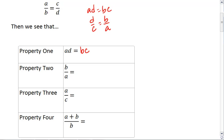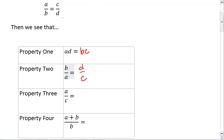Which shows me that if I wanted to flip the first ratio to be b over a, all that does is flip the second ratio to be d over c. And this is the reciprocal property of proportions, or property two. Thus we have means and extremes, we also have the reciprocal property.